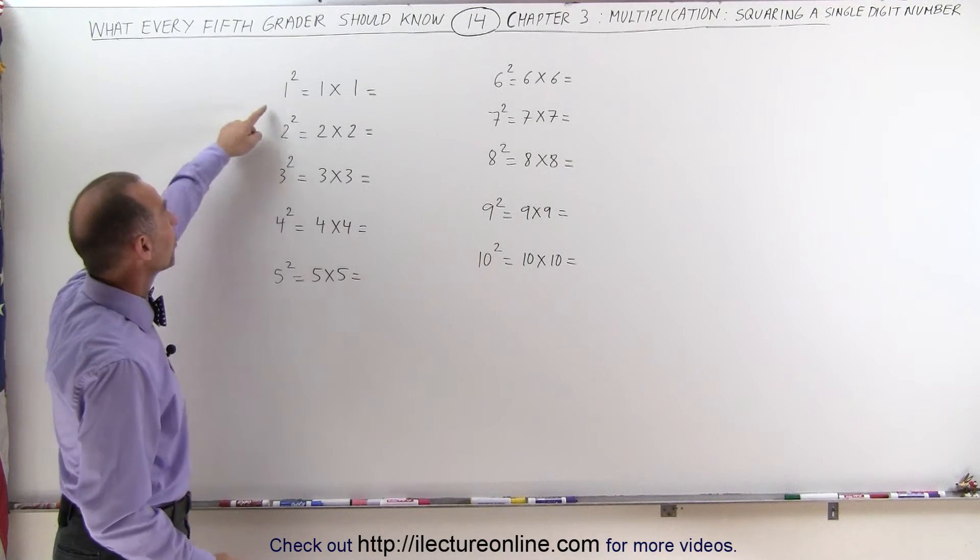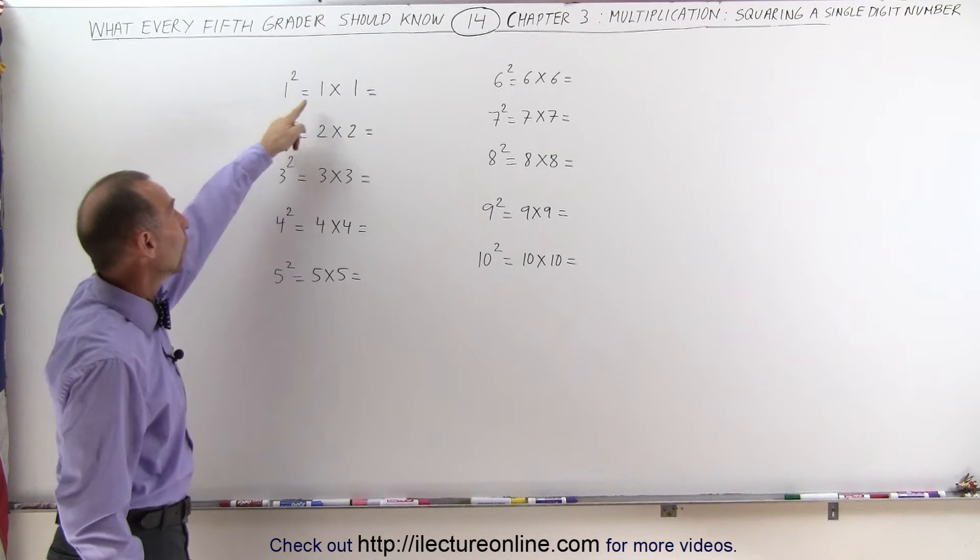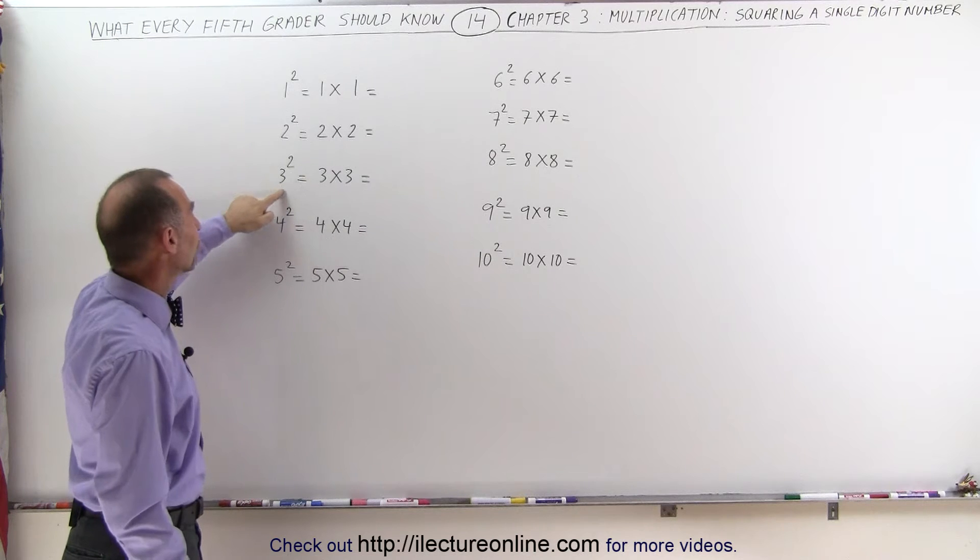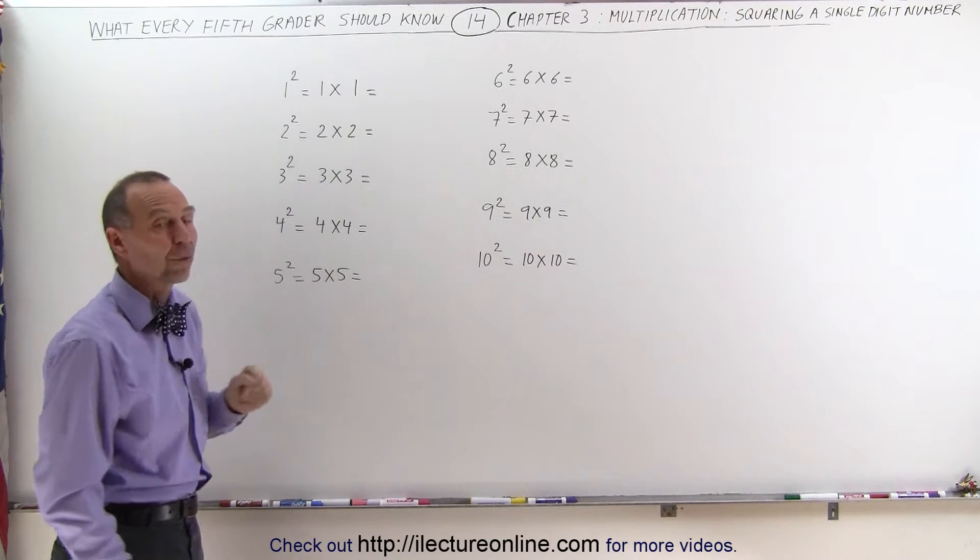For example, when we put an exponent above the number here, 1 squared, and that's how we say it, is the same as 1 times 1. 2 squared is the same as 2 times 2, 3 squared is the same as 3 times 3, 4 squared is the same as 4 times 4, and so forth.